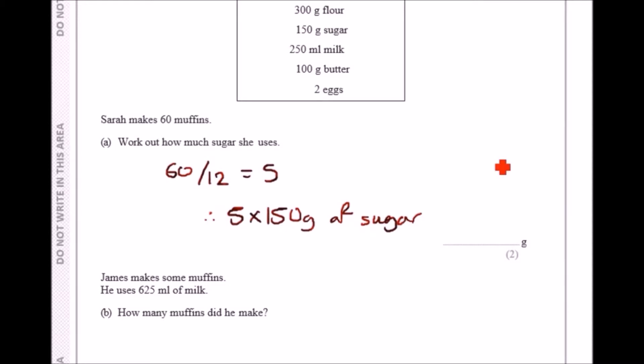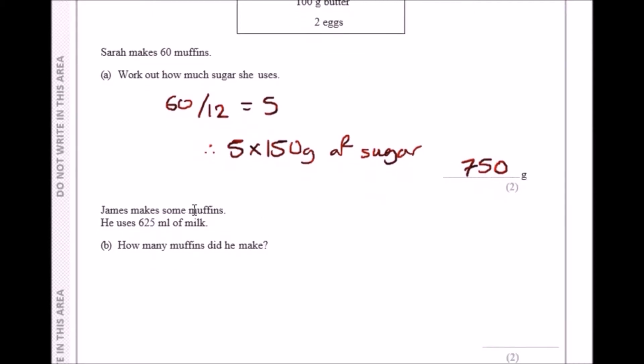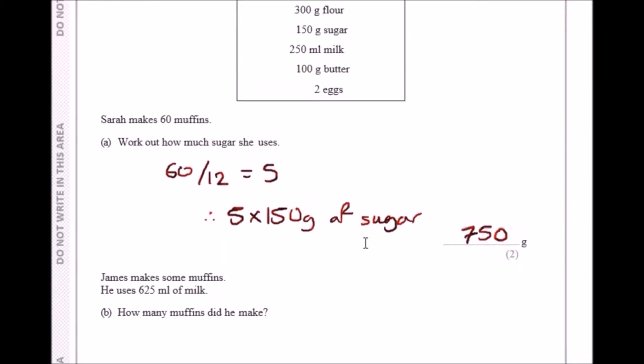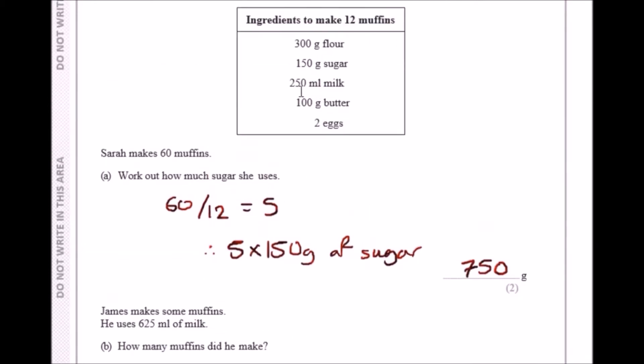Now, part B. James makes some muffins. He uses 625 milliliters of milk. How many muffins did he make? He used 250 milliliters of milk for 12 muffins, but in this case he used 625.